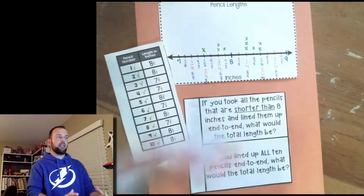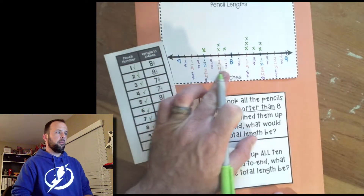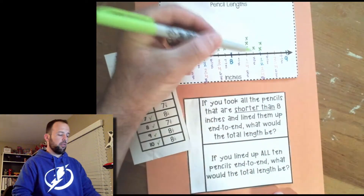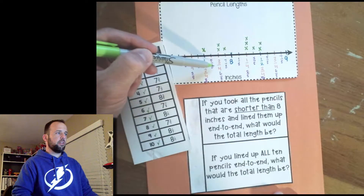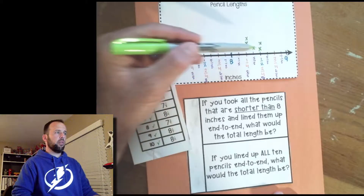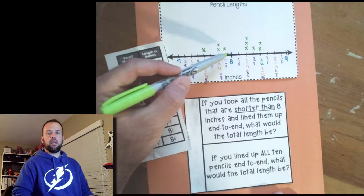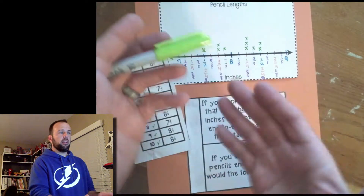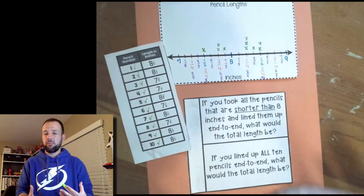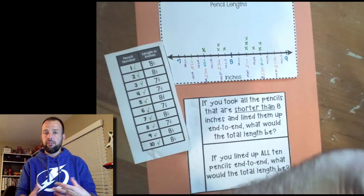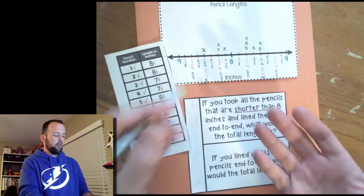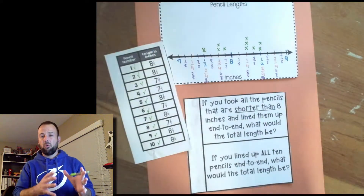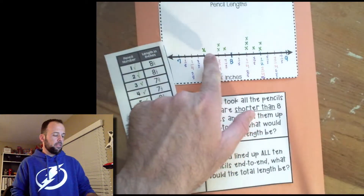My completed line plot shows that eight and one-fourth has the most pencils — three pencils measure that length. Seven and three-fourths and eight and a half each have two pencils, and the rest have one each. We can see much more easily now where these pencils group out. Line plots work great for displaying collected data — like a science fair project — and they're even easy to convert to a bar graph.